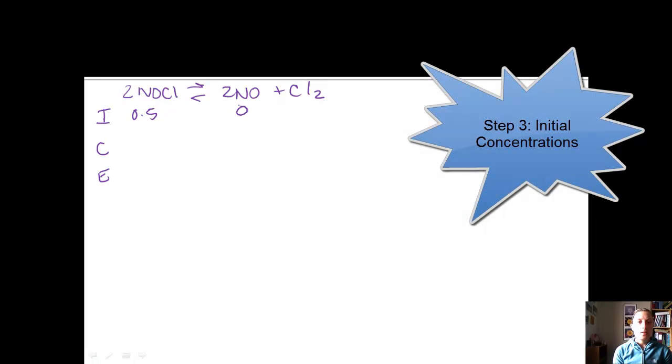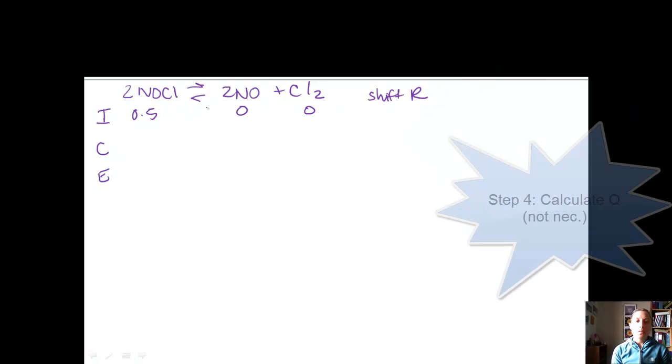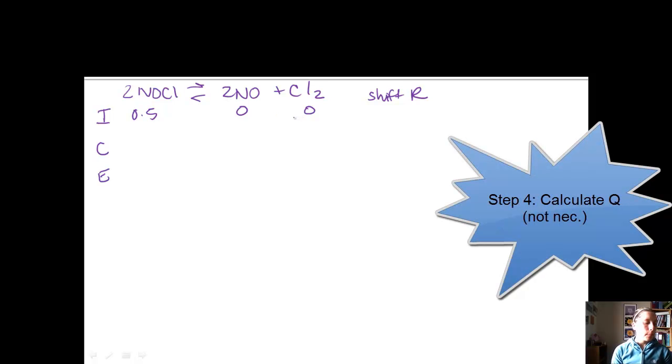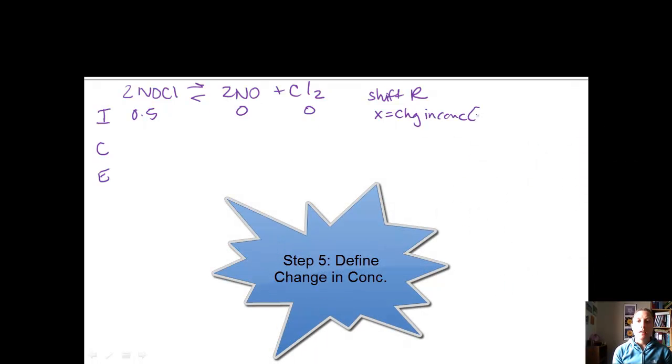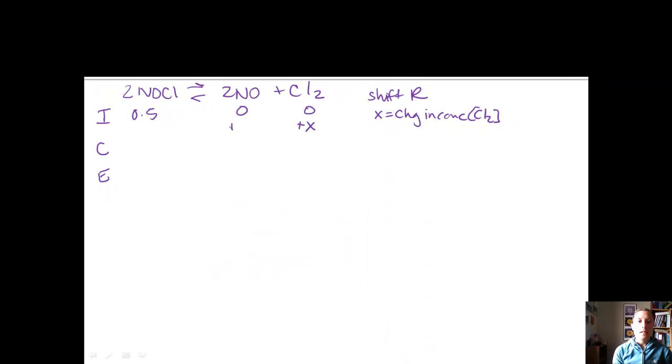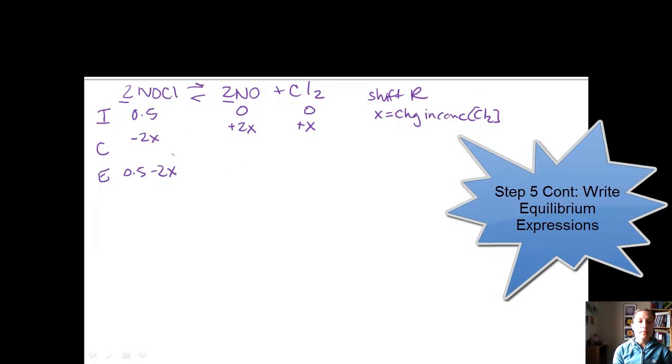Let's flip to the next page so we have some new work. So I'm going to rewrite my equation. I've got 2NOCl goes to 2NO plus Cl2. I said that I was starting with an initial of 0.5. We're going to assume there's nothing of the products, and so this is going to shift right because we're trying to form products. And so we're going to say that X is equal to the change in concentration of Cl2. So this is a plus X. This is a plus 2X because of the balanced chemical equation, which makes this one a minus 2X.